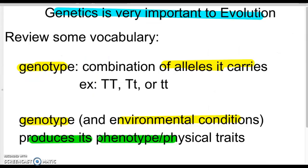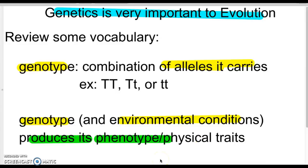Some background vocabulary to remember: genotype is the combination of alleles. When we write genotype we use letters — homozygous dominant would be two capital letters, heterozygous would be a capital and lowercase, and homozygous recessive would be two lowercase letters. Genotype and environmental conditions can produce a variety of different phenotypes or physical traits. The genes and the environment can both impact what the phenotype looks like.